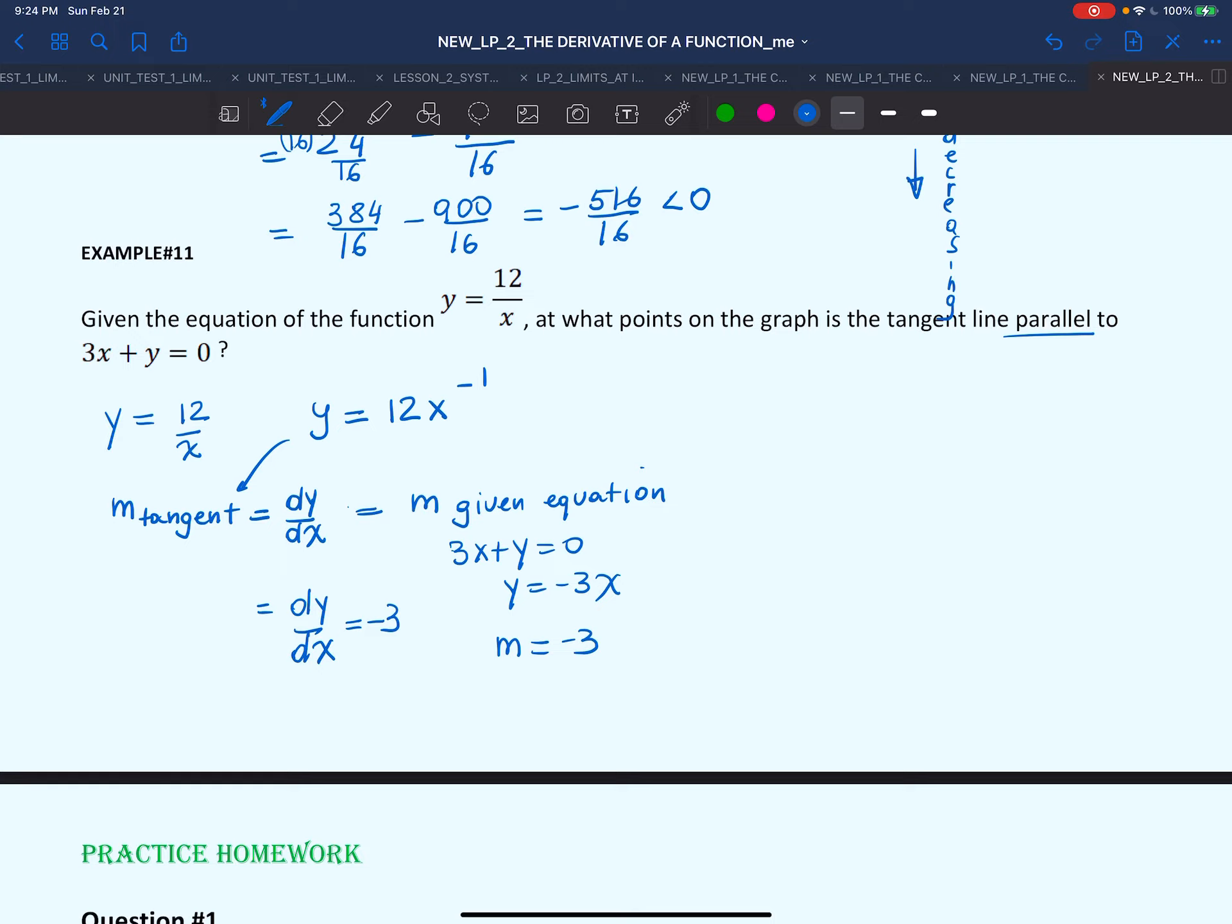This tells us that the derivative dy/dx must equal -3 at the point of tangency. We're going to find dy/dx. We have the function 12x^(-1). That would equal 12 * (-1)x^(-2), which is -12x^(-2). That's dy/dx. We are told that this derivative would equal -3. So -12x^(-2) = -3. Divide both sides by -12.